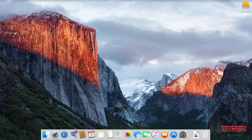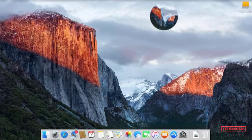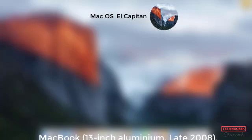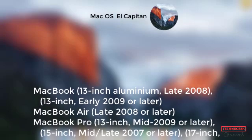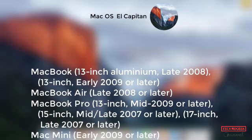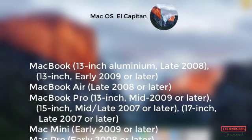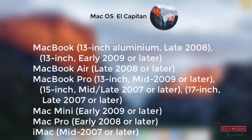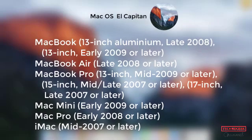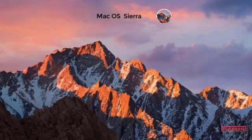System Requirements. Sierra is more demanding to run than El Cap. If your Mac sits in the band of machines that can run the latter but not the former, your decision may be made for you. Machines that can run Mac OS X El Capitan include: MacBook 13-inch Aluminum Late 2008, 13-inch Early 2009 or later; MacBook Air Late 2008 or later; MacBook Pro 13-inch Mid 2009 or later, 15-inch Mid/Late 2007 or later, 17-inch Late 2007 or later; Mac Mini Early 2009 or later; Mac Pro Early 2008 or later; and iMac Mid 2007 or later.